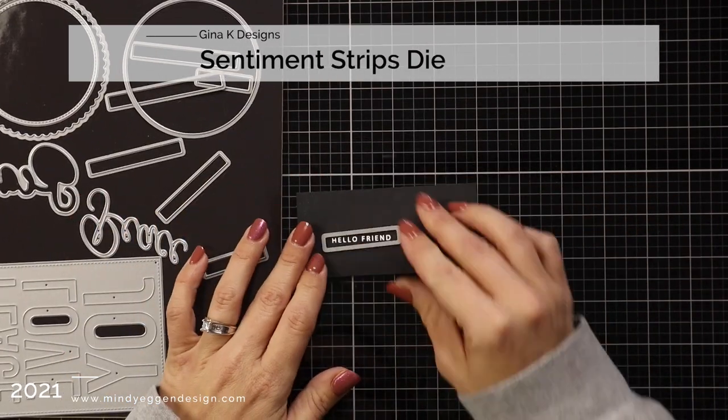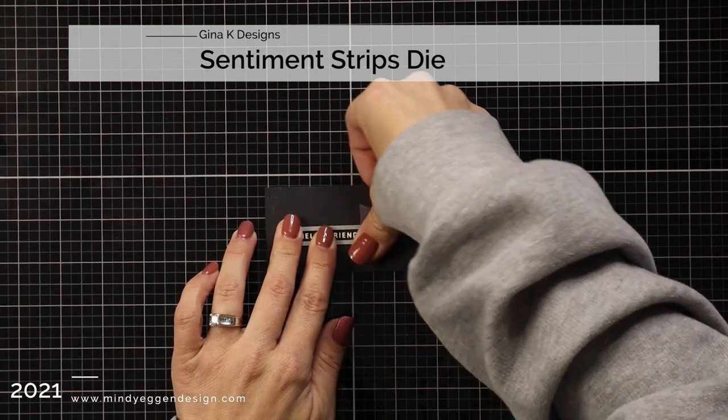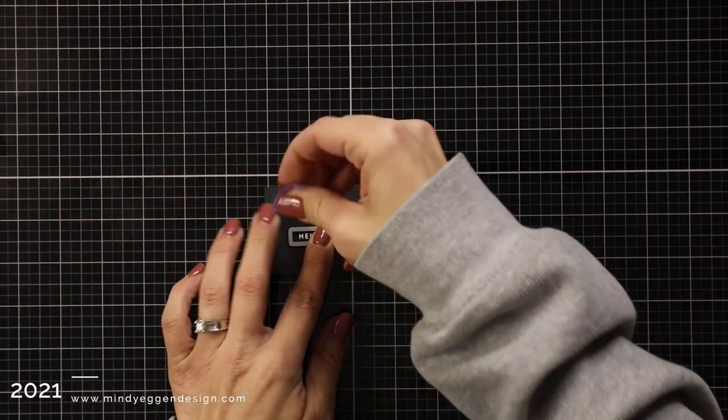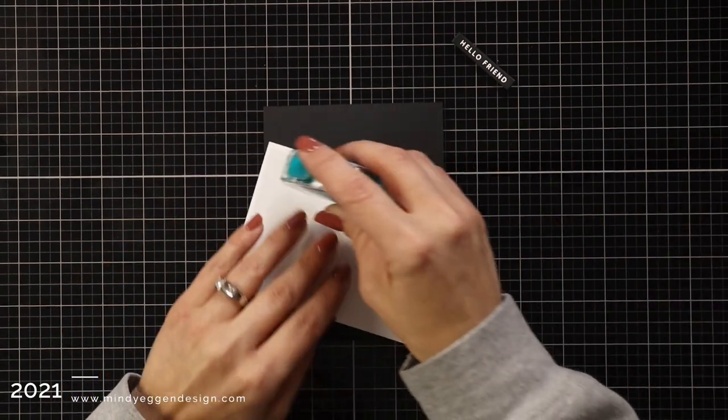I'm going to use the sentiment strips die. I found one on there that fit my sentiment perfectly, so after I line that up I'll hold that down with some low tack tape and die cut that out.